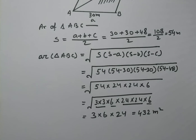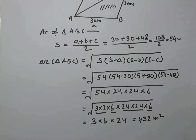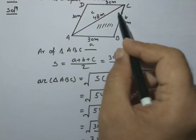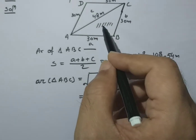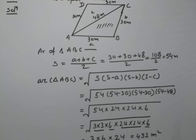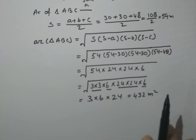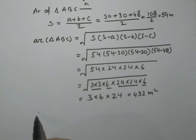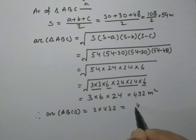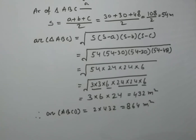Now, after this, we have found the area of one triangle. But if we need to find the area of the full rhombus — the diagonal divides it into two triangles of equal area. So if we need the full rhombus area, we double what we got. Area of ABCD = 2 × 432 = 864 meter square. This is the total area of the rhombus.